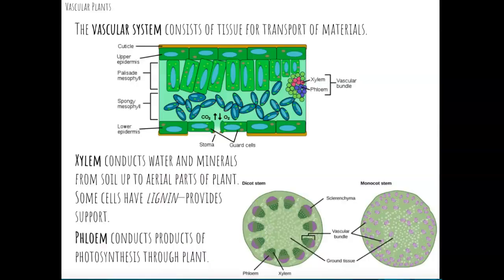The next group of plants we're going to discuss are the vascular plants. Bryophytes were small and lived close to the ground because they lacked vascular tissue to conduct water and nutrients from the soil and roots up to their leaf structures. Vascular plants evolved a system to conduct water and nutrients from roots up to leaves. This was a major breakthrough in plants being able to colonize land.